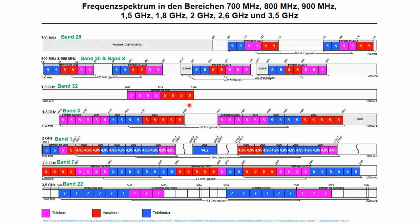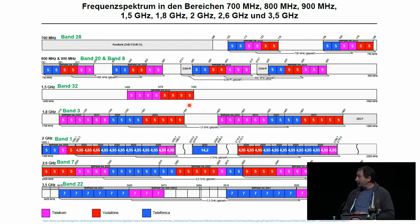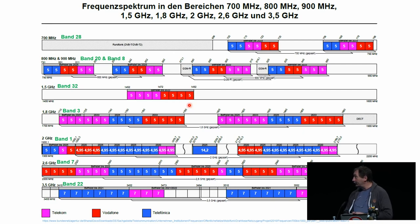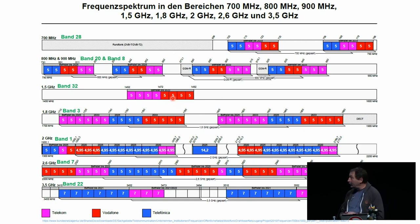Band 32 at 1.5 GHz has no uplink — it is downlink only. The reason isn't arbitrary: if a smartphone were to transmit at 1.5 GHz, it would interfere with the integrated GPS receiver operating at about 1.4 GHz. So this frequency is only used in combination with another frequency band for increasing downlink rates.